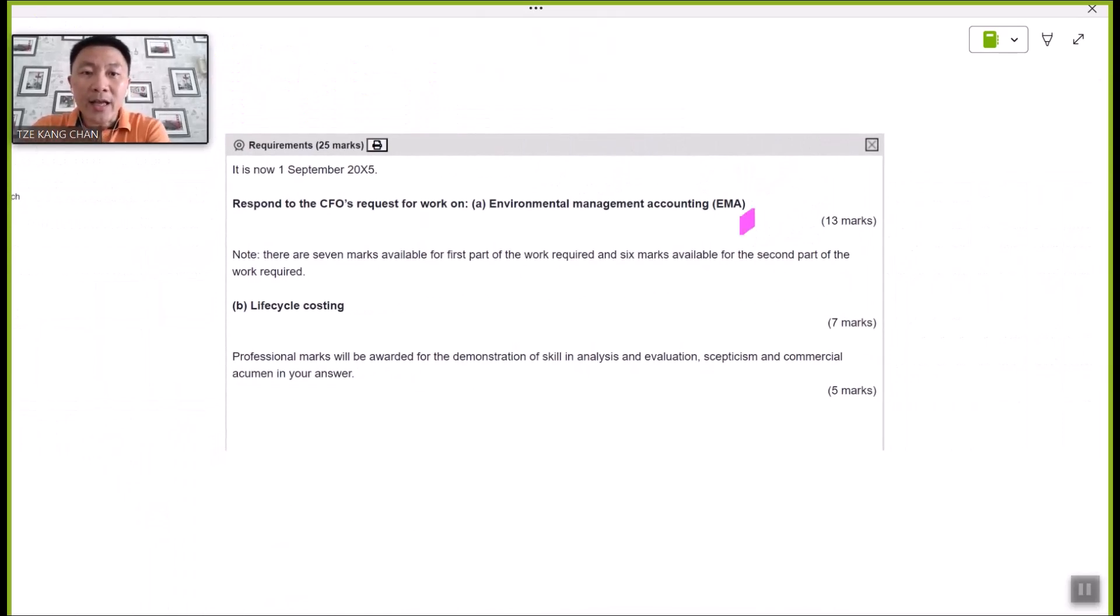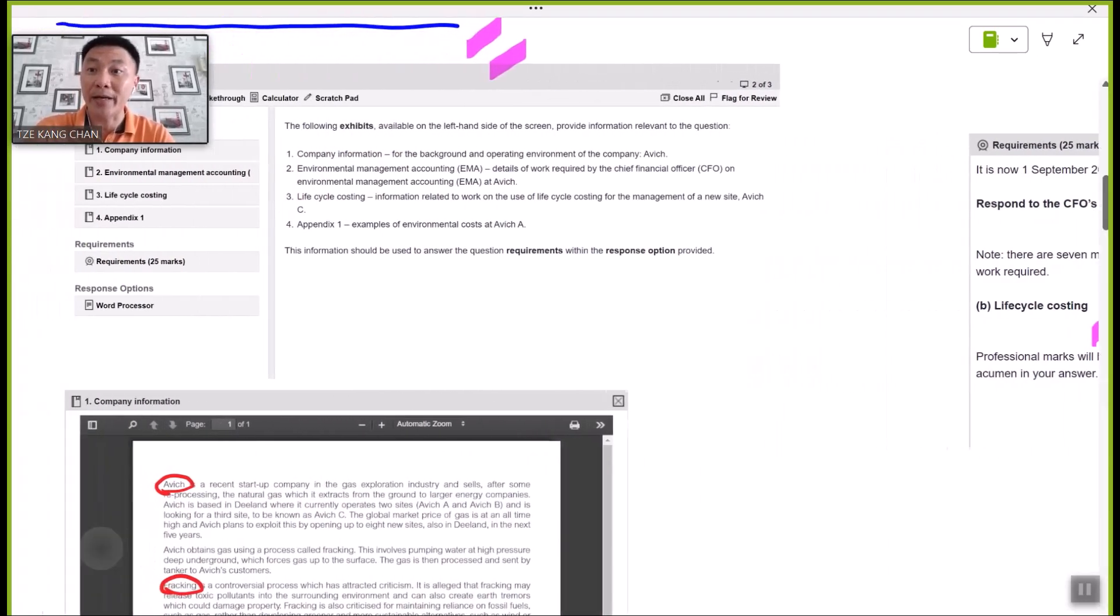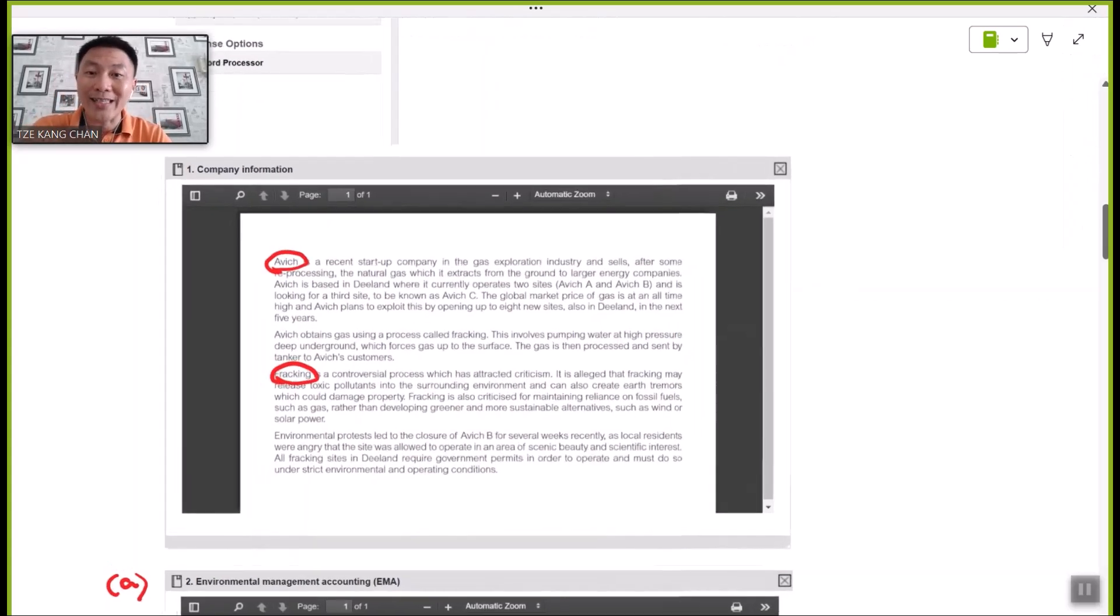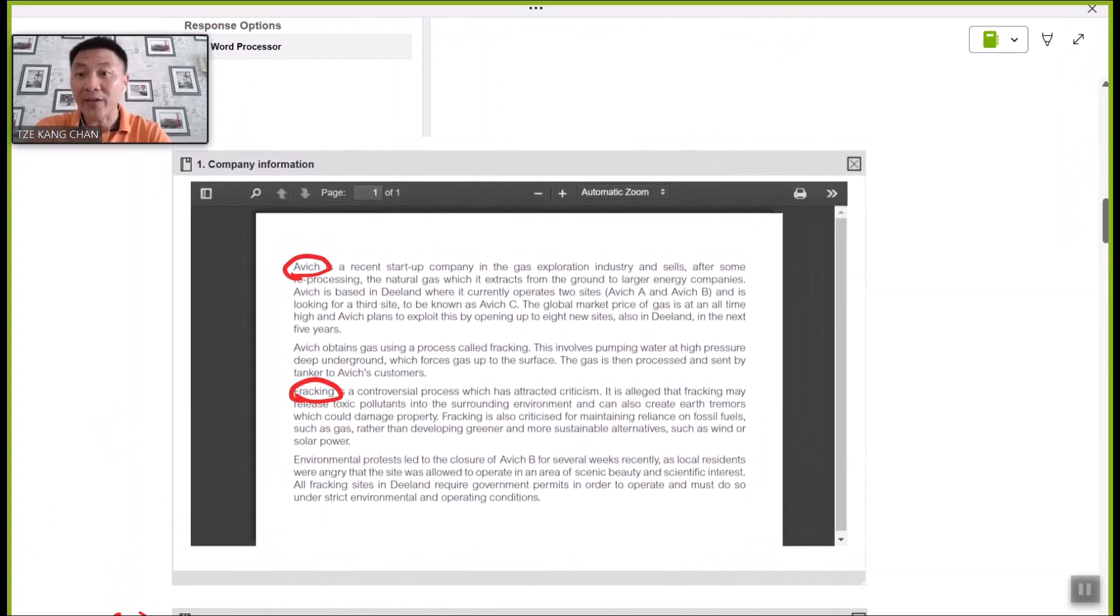Clearly there are two tasks required in the question. Task A is to respond to the work requested by the CFO pertaining to EMA. Task B is a matter of life cycle costing. These are all the terms that we have discussed in the earlier part of this video. If you have spent some time to glance through the content of the company as the case, you will notice company Avich is clearly involved in the mining industry on gas extractions from underground.